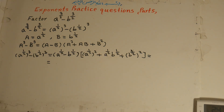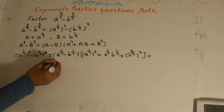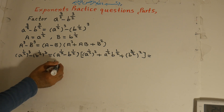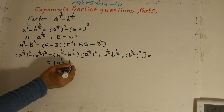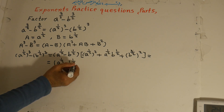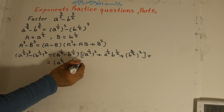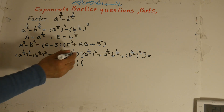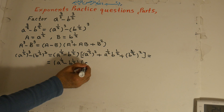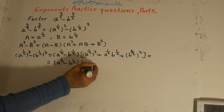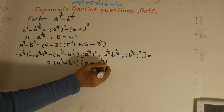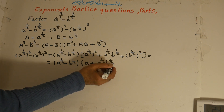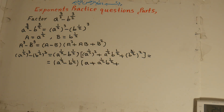We should not forget to write the first factor: a to the power of 1 over 2 minus b to the power of 1 over 2. The second factor is: a to the power of 1 over 2 squared equals a, plus a to the power of 1 over 2 times b to the power of 1 over 2, plus b to the power of 1 over 2 squared which equals b.